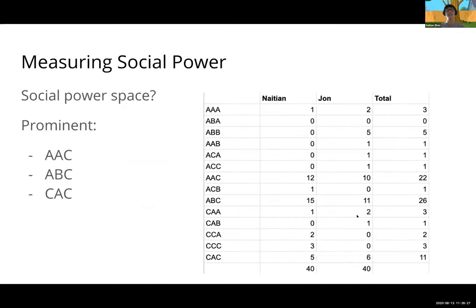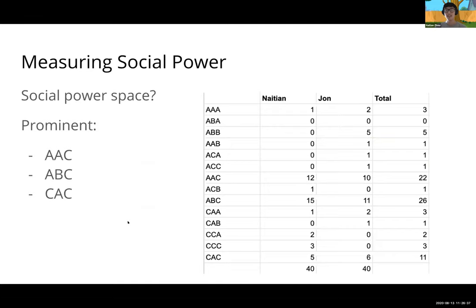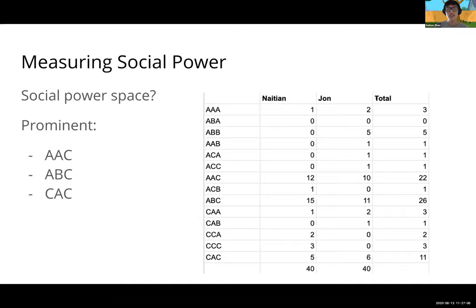We can actually map out a social power space. Given the three types of power, we can see who has what type in an interaction and look at all different combinations. For example, AAA means one person has all three types; ABC means one person has situational, another has communicative power, and we can't tell who has external power. Between the two of us, we actually covered 13 out of the 14 possible combinations for social power dynamics.